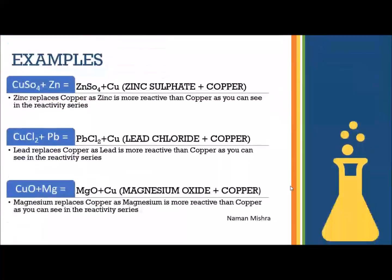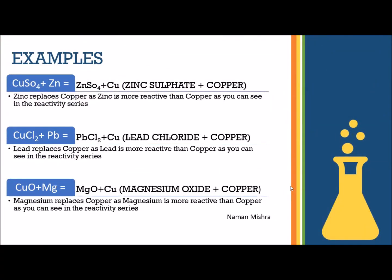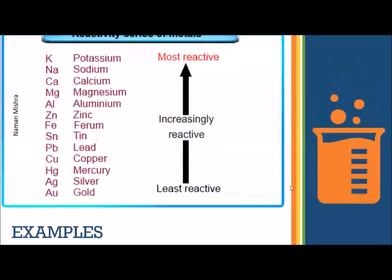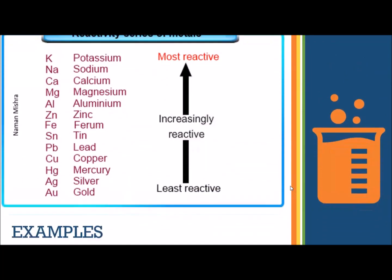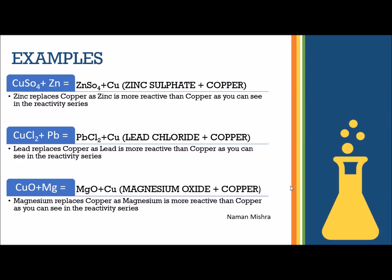The first example is CuSO4 (copper sulfate) plus zinc. If we go back to our reactivity series table, we know zinc is more reactive than copper, so zinc replaces copper. You get zinc sulfate plus copper. As seen in the reactivity series, copper is less reactive than zinc — or in other words, zinc is more reactive than copper.